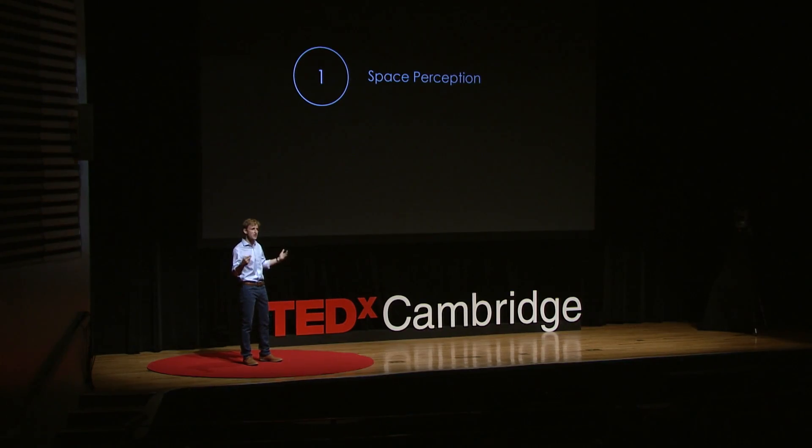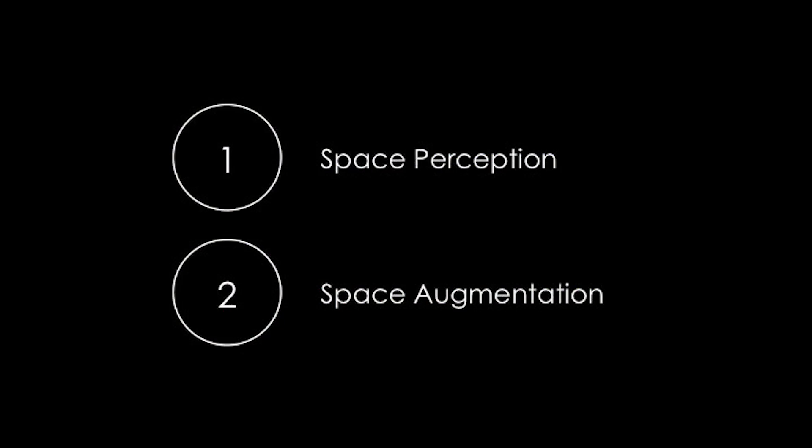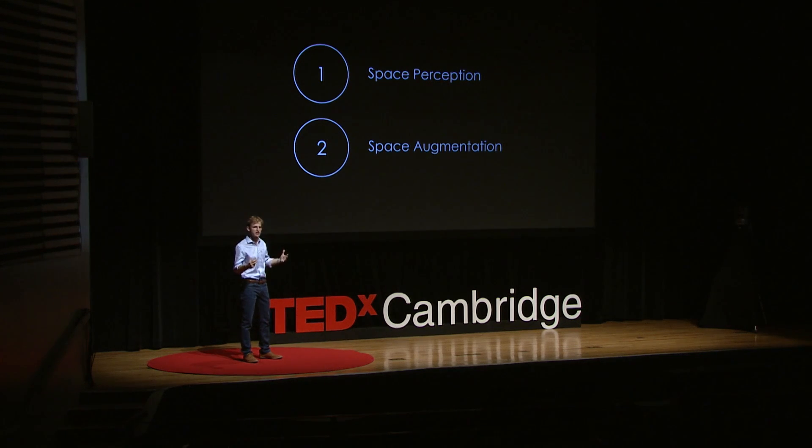If principle number one was that we don't need as much space as we think we need, you just saw principle number two in action. The only way of making a space truly act like it was twice or three times bigger is through robotics. And robotics doesn't boil down to humanoid robots trying to conquer the world in the movies. Think about all those robots that are already making your lives much easier and much more efficient — the coffee maker, the dishwasher, the vacuum cleaner, the elevator. Those are all robots too.